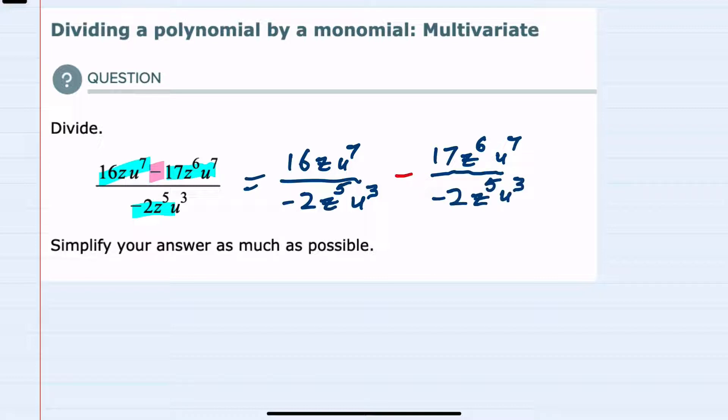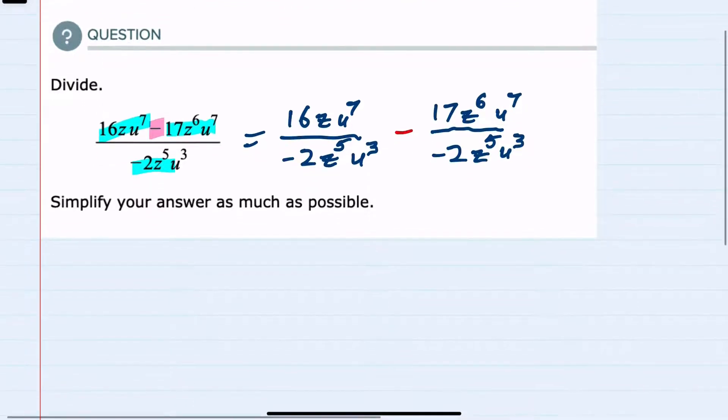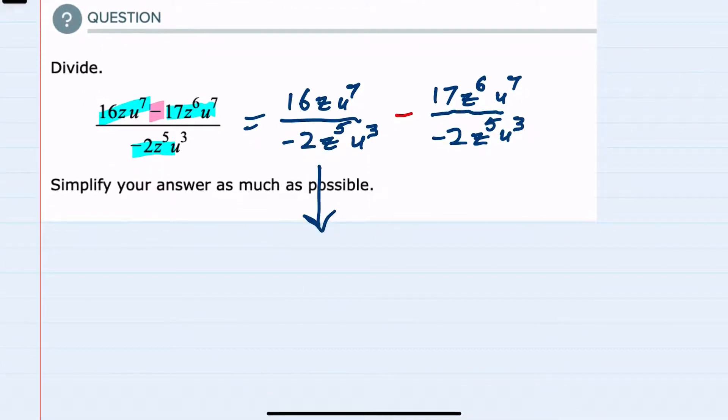Now that I have two terms, two fractions, I can simplify each one separately. For the first term, looking at the numerical part, I have 16 and minus 2. 2 goes into 2 one time and 2 goes into 16 eight times. I still have this negative, so I want to make sure I don't lose that. I've simplified this to negative 8 in the numerator.